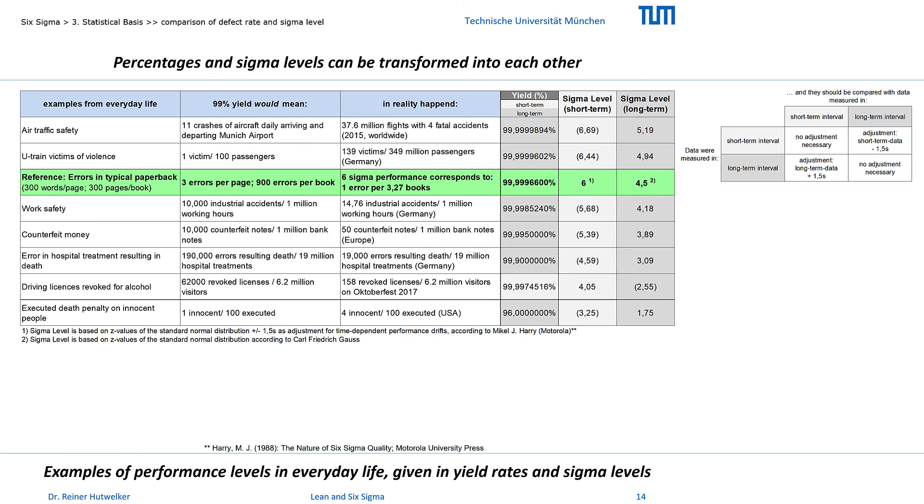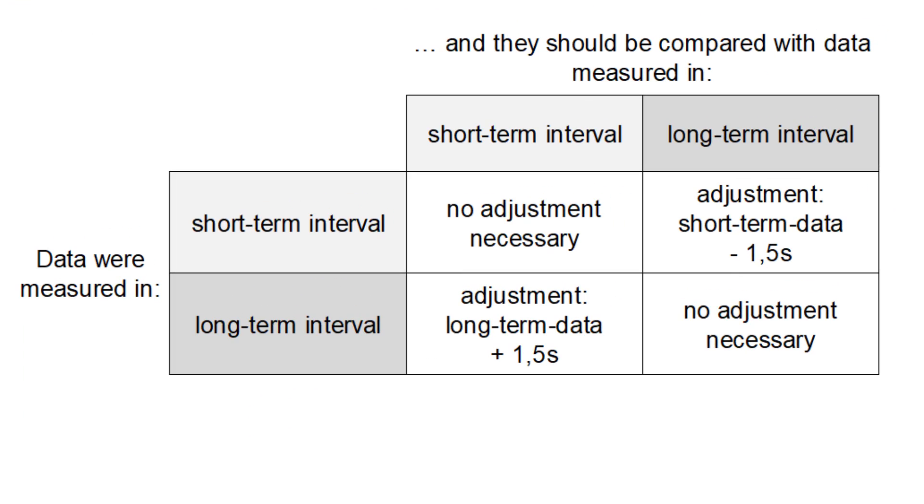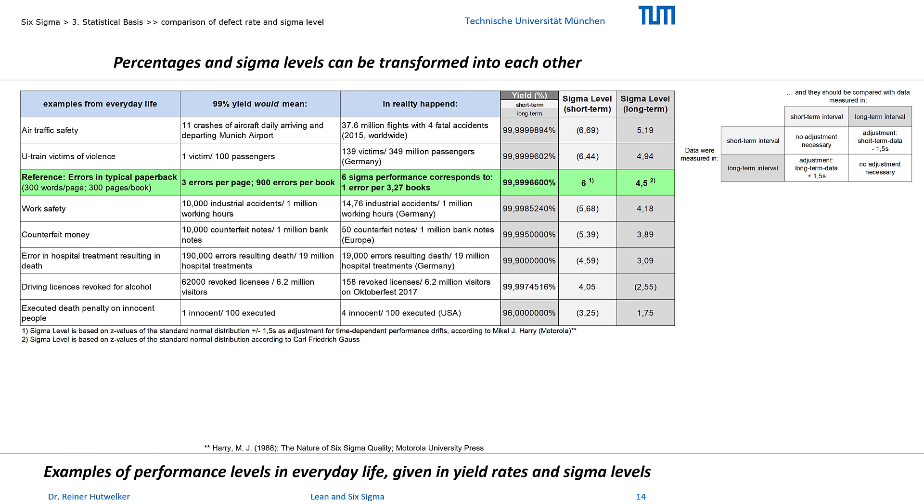But we won't need this for your project. In a typical 6 sigma project, we compare short-term measurements from the measure phase before with short-term measurements from the control phase after improvements. And for both samples, we will calculate the sigma levels based on z-values according to the standard normal distribution. The sigma guide tool contains a calculator that allows you to make an initial assessment of the performance of your process.